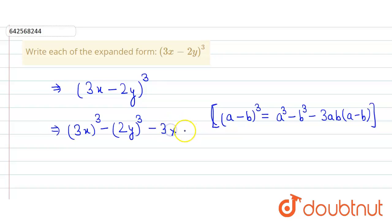So it will be 3 × 3x × 2y, and then in bracket it is a minus b, so that will be 3x minus 2y.